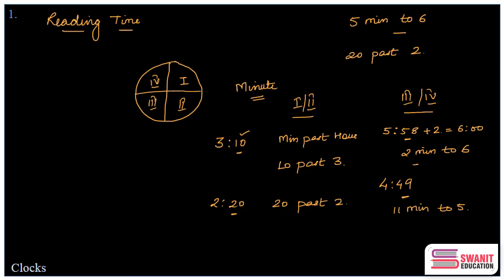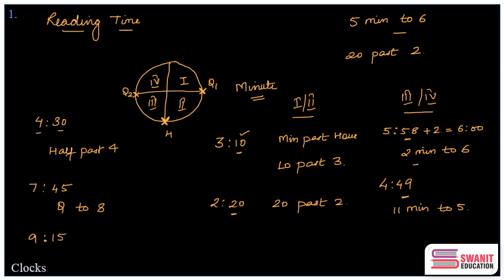There are also special positions where the minute hand is at the quarter or half position. For example, if the time is 4:30, instead of saying '30 past 4' we say 'half past 4,' because the minute hand points at the half position. Likewise, if it is 7:45, instead of '15 minutes to 8' we say 'quarter to 8.' And if it is 9:15, instead of '15 past 9' we say 'quarter past 9.' This is how we read time in clock-based questions.